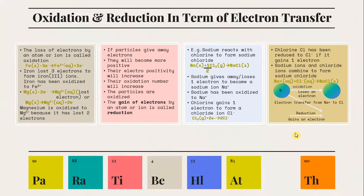Let's look into oxidation and reduction in terms of electron transfer. The loss of electron by an atom or ion is called oxidation. For example, Fe2+ loses 3 electrons to form Fe3+ ions — Fe has been oxidized to Fe3+. Magnesium is oxidized to Mg2+ because it has lost 2 electrons. If a particle gives away electrons, it becomes more positive, its oxidation number will increase, and the particle is oxidized.